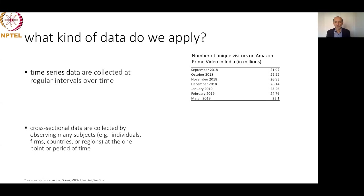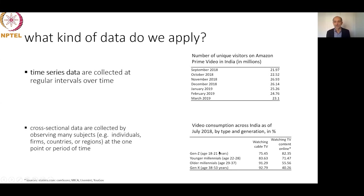Another kind of data is cross-sectional data, collected by observing several subjects at one point in time. For instance, video consumption across India for a fixed period — July 2018 — broken down by types and generation: who is watching cable TV versus online content, divided by generation. This kind of data is useful, but for forecasting we mostly use time series data.